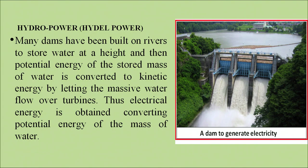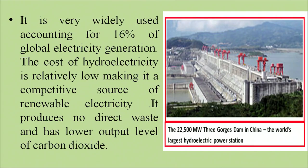Many dams have been built on rivers to store water at a height. The potential energy of the stored water is converted to kinetic energy by letting the mass of water flow over turbines, thus generating electrical energy. Hydropower accounts for about 16% of global electricity generation. The cost of hydroelectricity is relatively low, making it a competitive source of renewable electricity. It produces no direct wastage of water and has a lower output level of carbon dioxide.